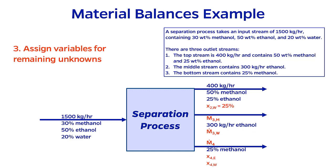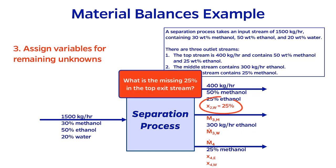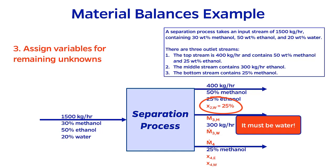Next let's assign variables for the unknowns. Going off what I just said, what else could possibly be in the top stream? Well, because methanol and ethanol are already accounted for, the only other possibility is water. And since the compositions have to add up to 100 percent, we can actually fill in the percentage here instead of treating it like an unknown.